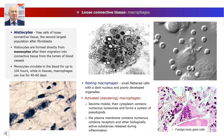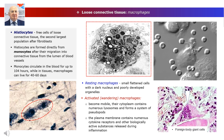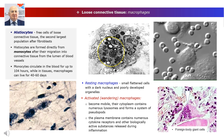Depending on their functional state, histiocytes are classified into resting state — small flattened cells with a dark nucleus and poorly developed organelles — and activated, wandering macrophages. The latter become mobile; their cytoplasm contains numerous lysosomes and forms a system of pseudopods. The plasma membrane contains numerous cytokine receptors and other biologically active substance receptors released during inflammation. Accelerated video recording of cell culture shows the process of macrophage engulfing red blood cells.